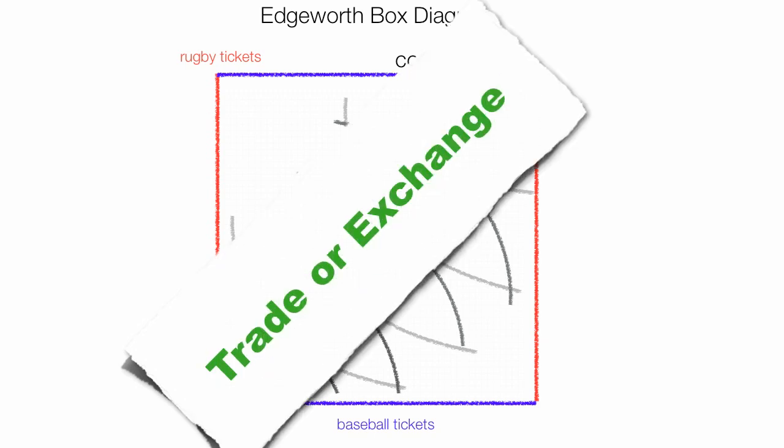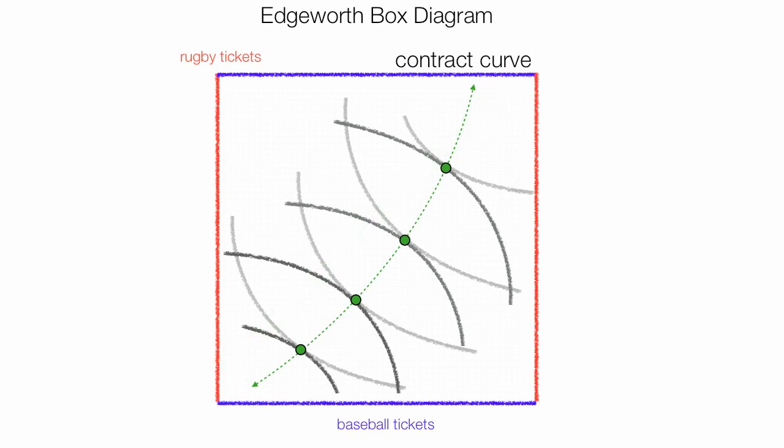The Edgeworth diagram or graph shows the trade or exchange between two individuals and even two countries sometimes.